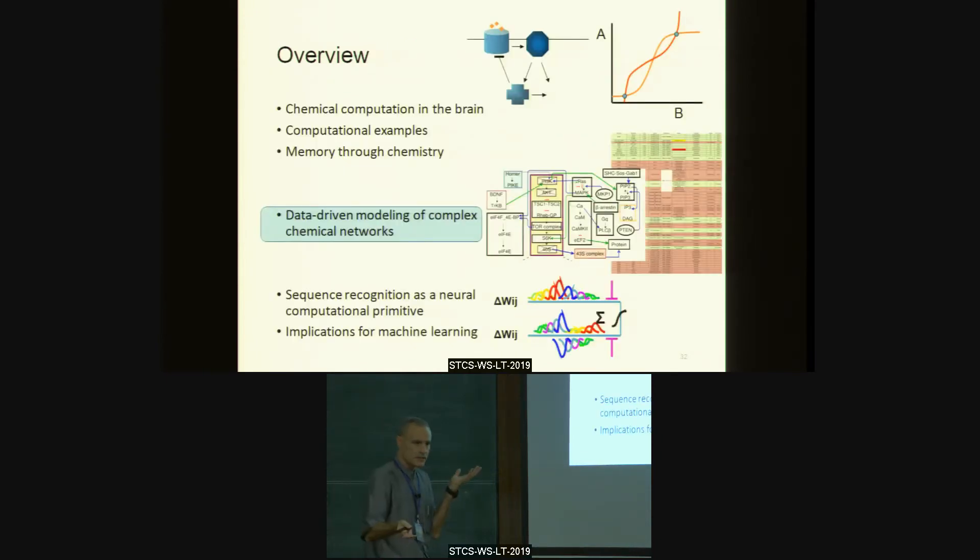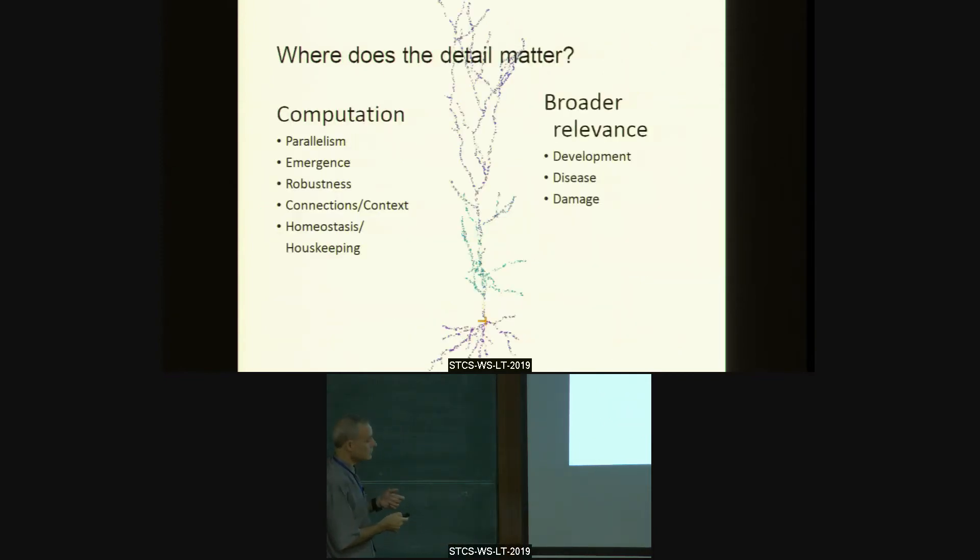So that sort of illustrates one situation where chemistry does some very interesting computations. So let me just give you a glimpse of how we are working towards, and this is a continuing process, how we're working towards getting the numbers. And it's a really hard problem. So first of all, first question is why do you want to bother by digging down to the level of details of all these molecules? Well, I have a sort of mnemonic. It says PERCH.